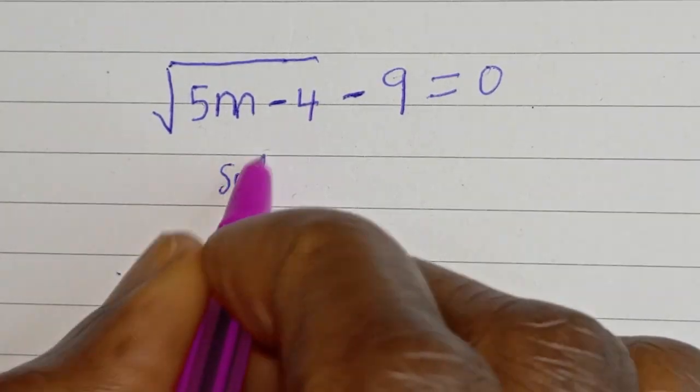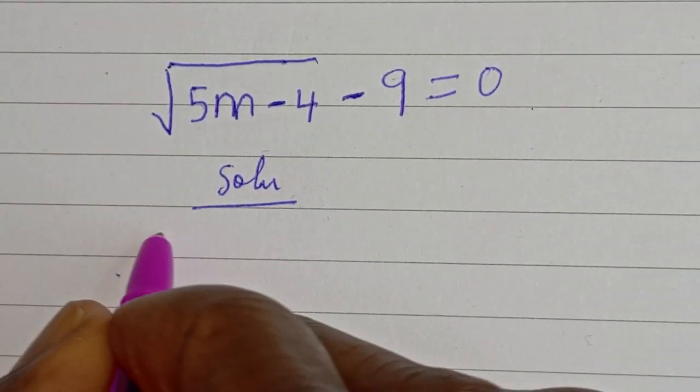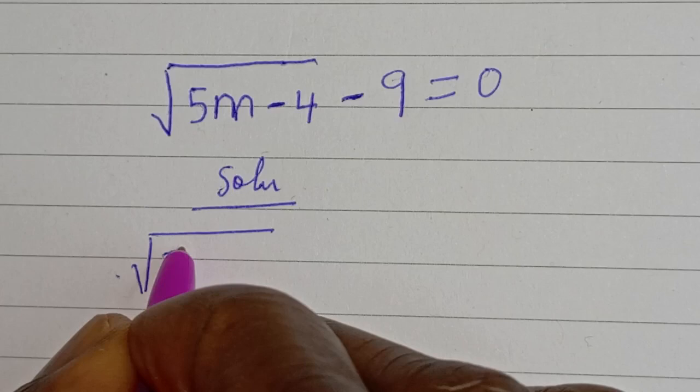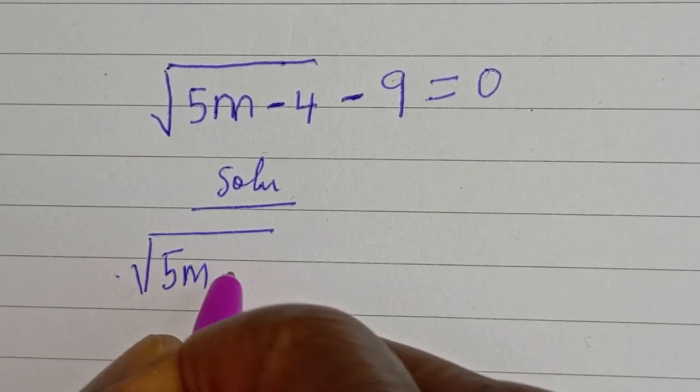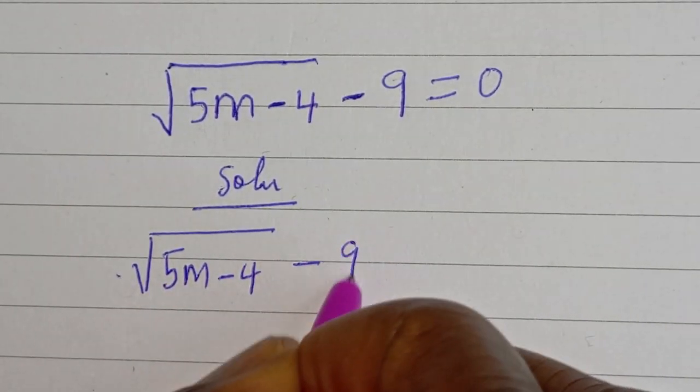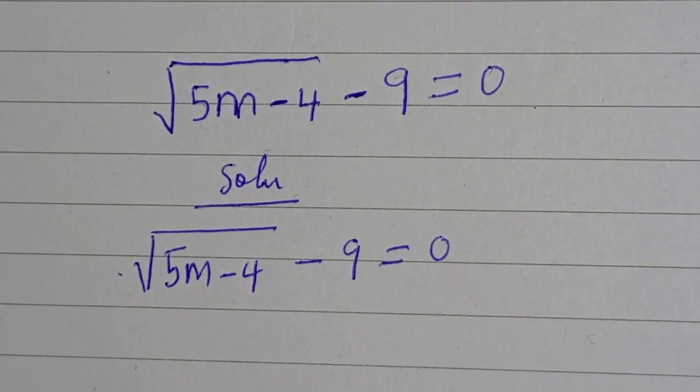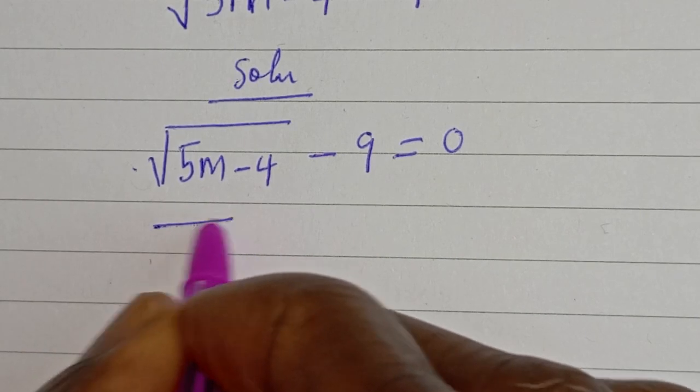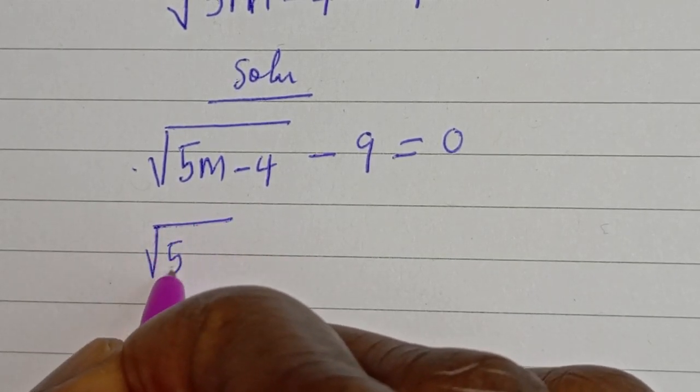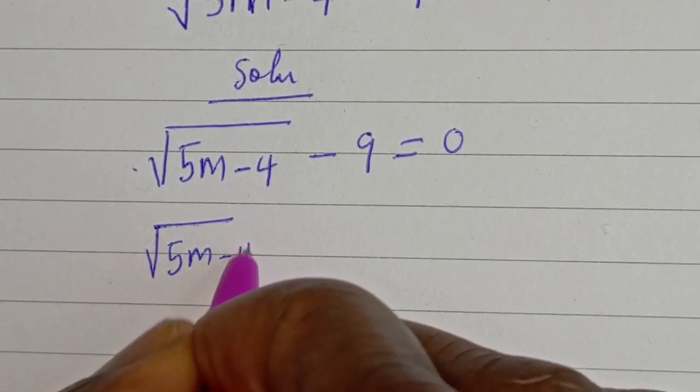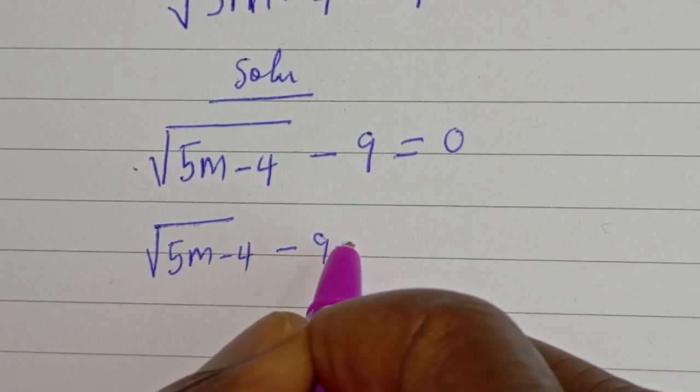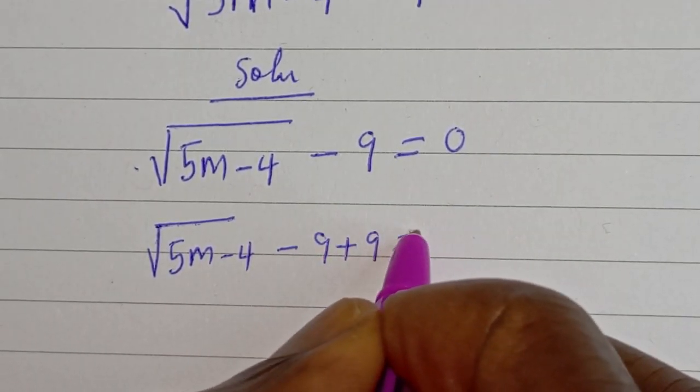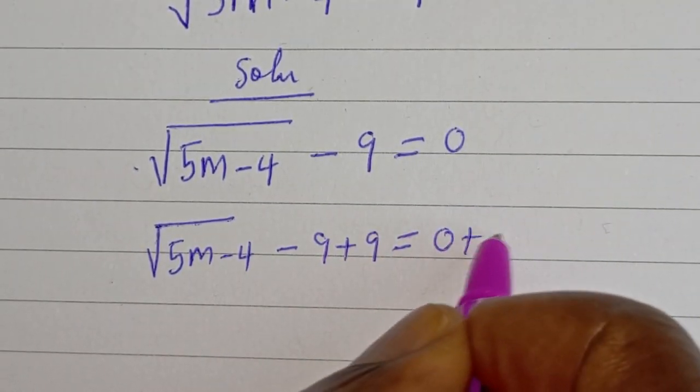Solution. Square root of 5m minus 4 minus 9 is equal to 0. Let's add 9 to both sides of this equation. Square root of 5m minus 4 minus 9 plus 9 is equal to 0 plus 9.